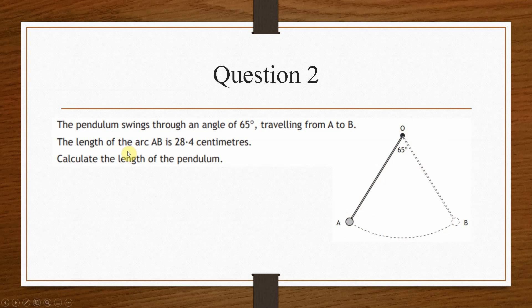And the length of the arc is 28.4 centimetres. So it's telling us that this arc here is 28.4 centimetres. And it's asking us to calculate the length of the pendulum. So this time we're asked for this length here. Whereas in the previous question, we were told what the radius was. So essentially this time we have to find the radius.